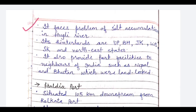Kolkata port faces the problem of silt accumulation in the Hooghly river. Because of heavy silt, ships and boats cannot navigate the river easily, so the port is losing its advantage and import-export is increasingly shifting to other ports. Its hinterlands include Uttar Pradesh, Bihar, Jharkhand, West Bengal, Sikkim, and the northeastern states. It also provides port facilities to landlocked neighbours like Nepal and Bhutan, which conduct their import-export through Kolkata port.